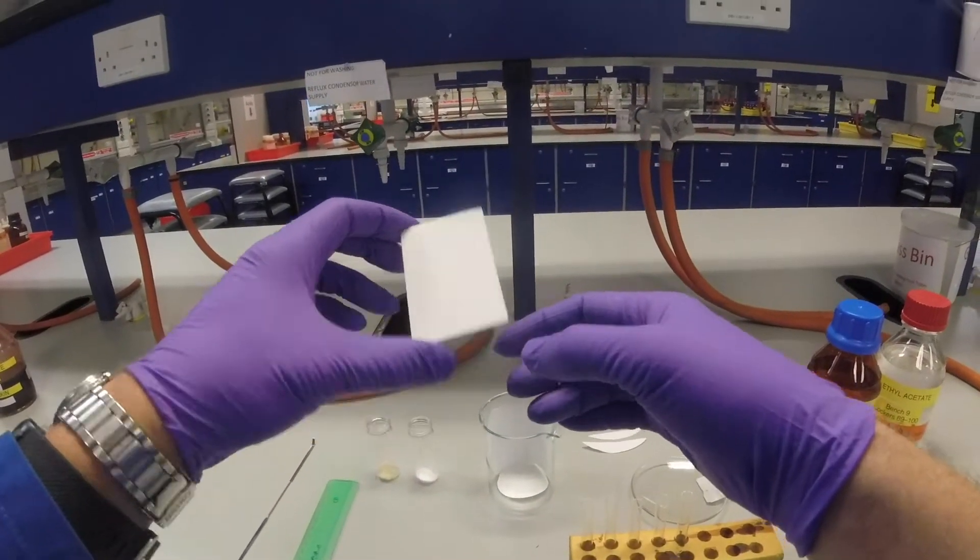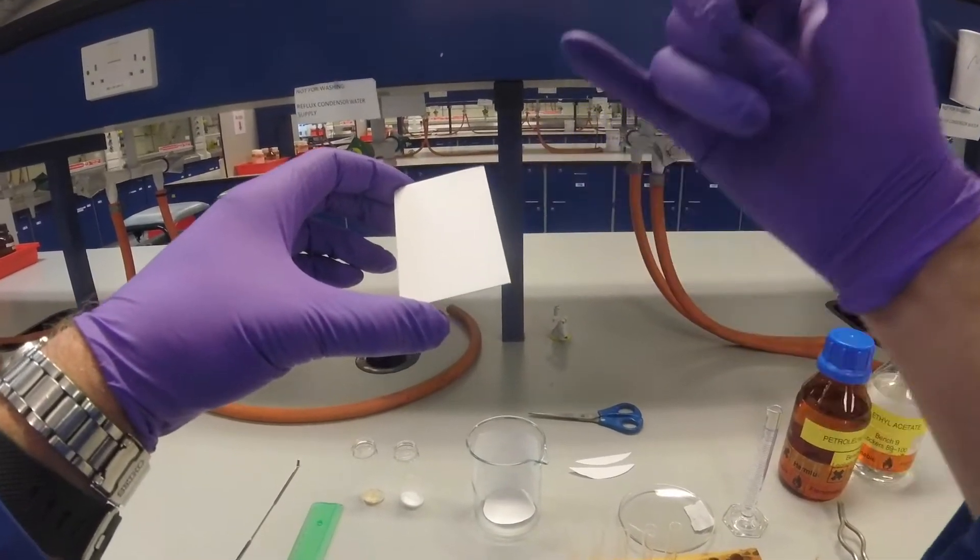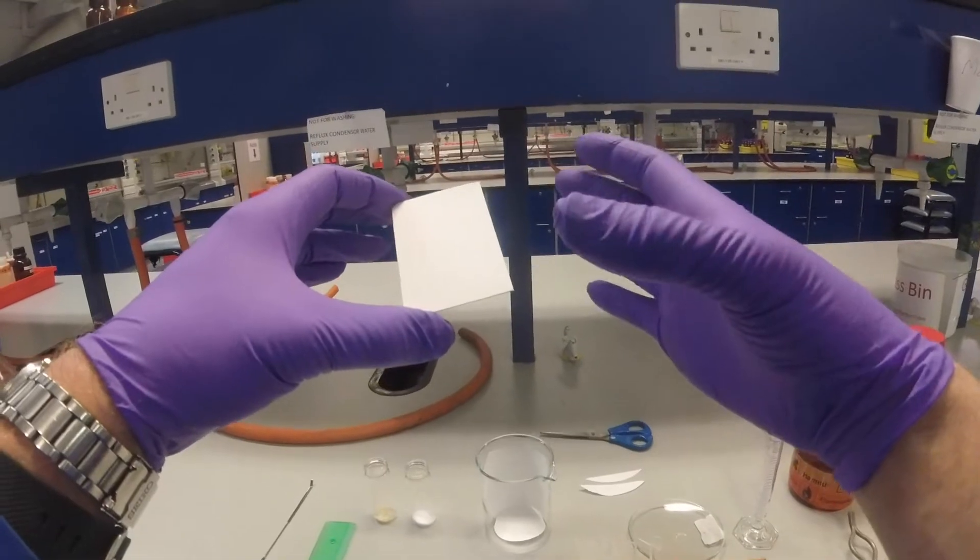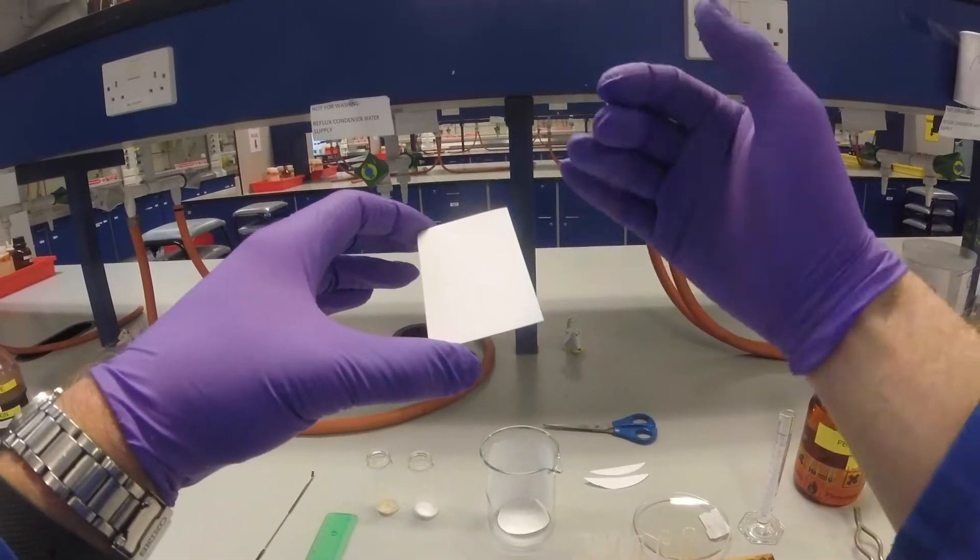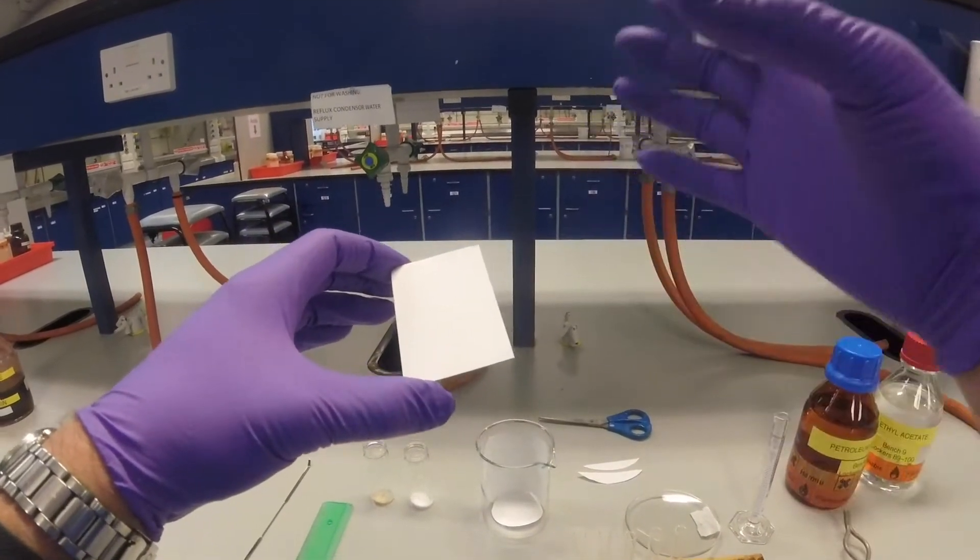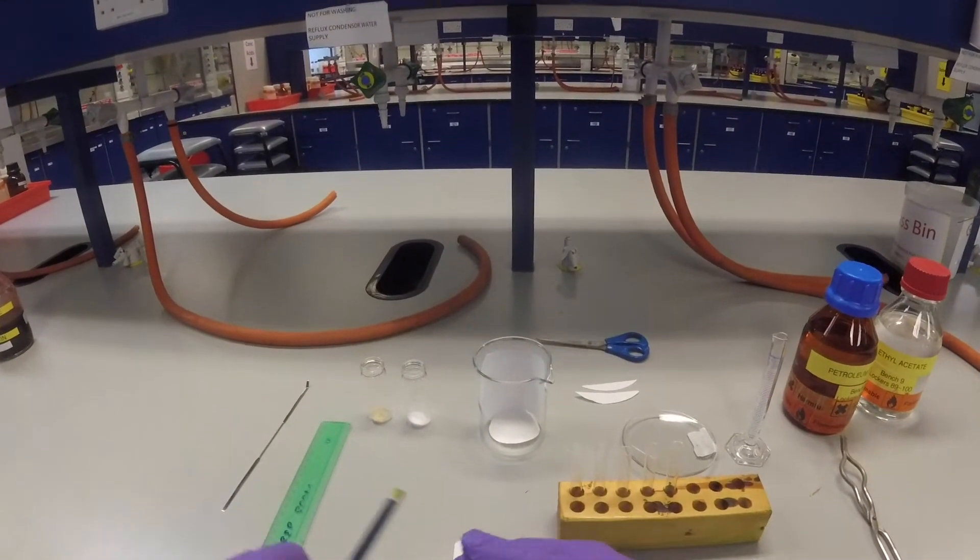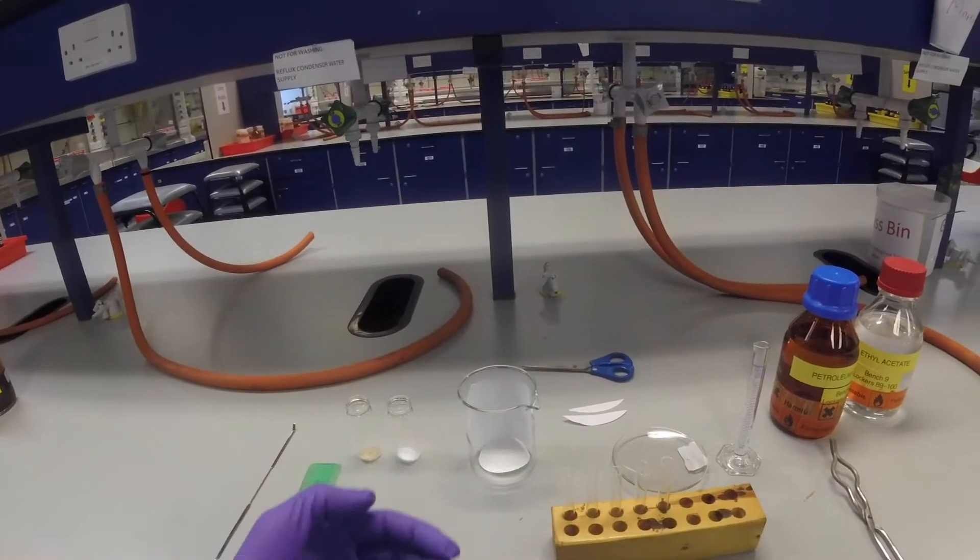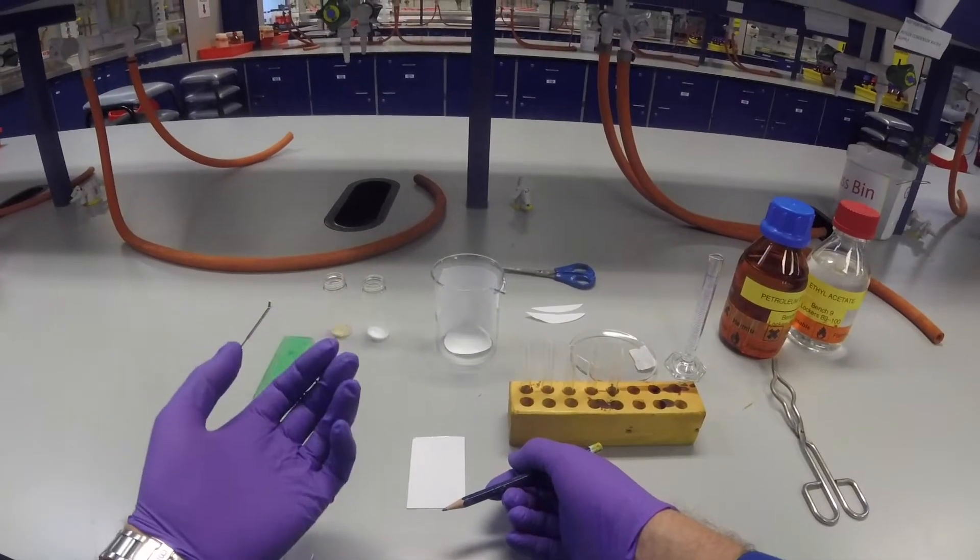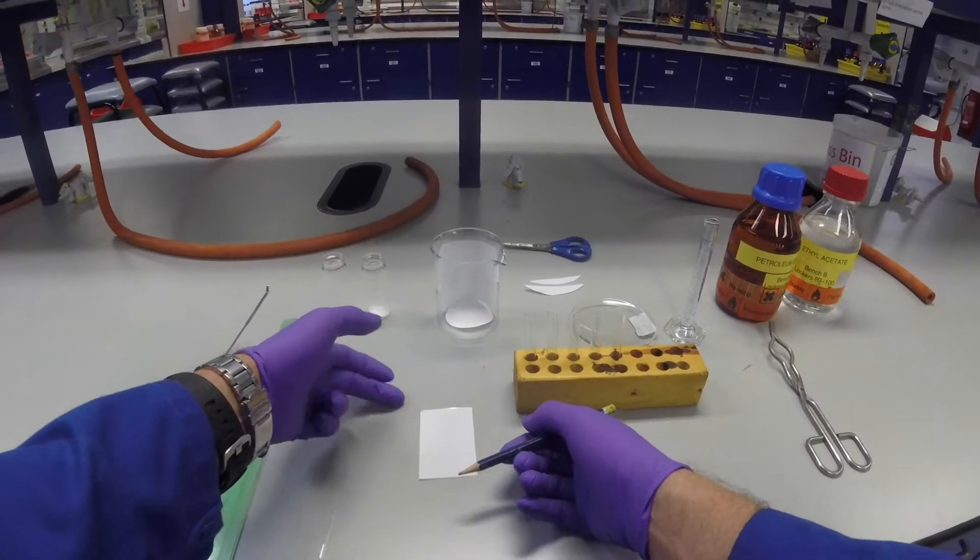The TLC plate is an aluminum plate with a thin layer of silica gel, silica dioxide, and the silica is your stationary phase. The silica has lots of SiOH bonds on the surface with a very large surface area, so there's lots of possibility for hydrogen bonding interactions to occur. More polar molecules will undergo more hydrogen bonding and stick to the silica and move slowly up the plate, whereas things with less polar groups will move more quickly up the plate as they interact more with the solvent than the silica.